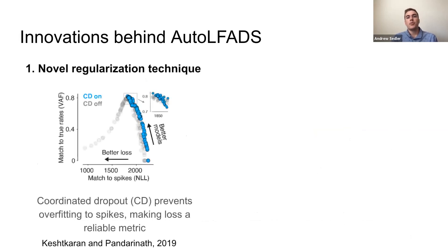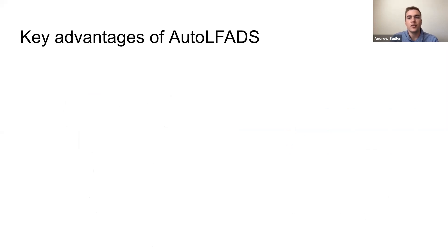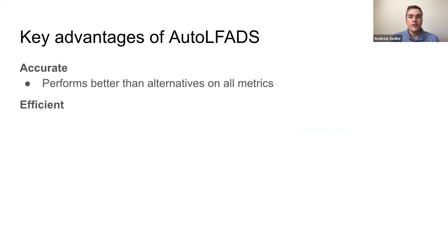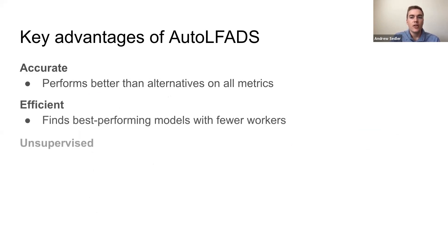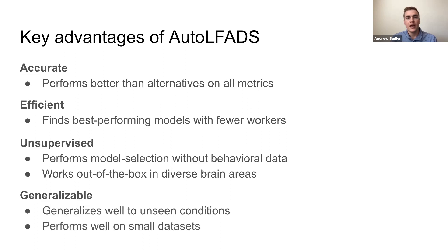Auto LFADS solves these key problems with two complementary innovations. The first is a novel regularization technique called coordinated dropout, which prevents overfitting to spikes, allowing us to simply select high-performing models by negative log likelihood rather than behaviorally biased supervision metrics. The second is our use of an efficient hyperparameter search algorithm called population-based training to discover optimal hyperparameter schedules. Auto LFADS surpasses LFADS in four key ways: it infers higher quality representations of neural activity, finds high-performing models much more efficiently, is unsupervised with respect to behavioral data and brain area, and produces generalizable dynamics models on condition subsets and small datasets.